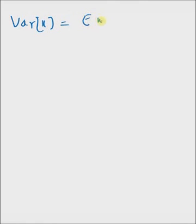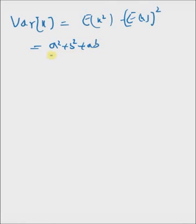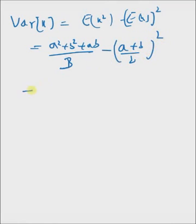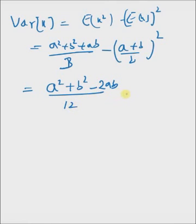So the variance of x is given by expectation of x squared minus expectation of x whole squared. We already know expectation of x is a plus b by 2, so we subtract a plus b by 2 whole squared. By simple algebraic manipulations, we can show this equals a squared plus b squared minus 2ab by 12. Hence, the variance of x is given by a minus b whole squared by 12.